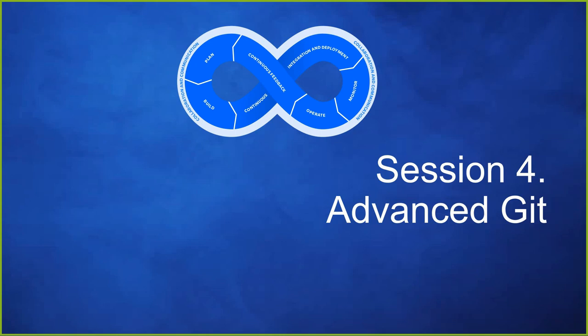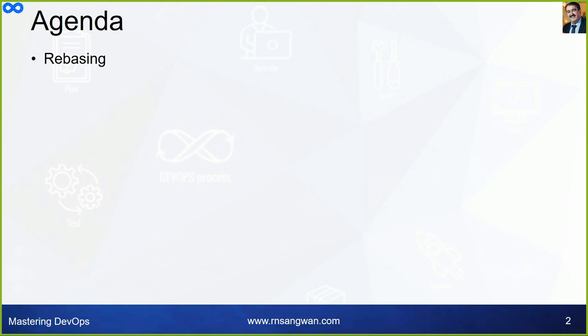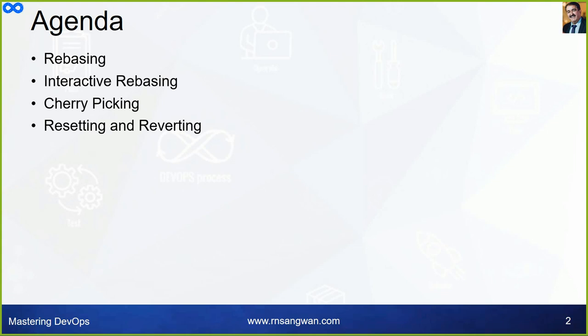Session four: Advanced Git. What you will understand and learn in this session: rebasing, what it is, interactive rebasing, cherry picking, resetting and reverting, and stashing. All these are interesting advanced topics of Git, and you'll understand these topics in this session.